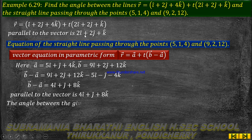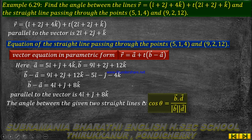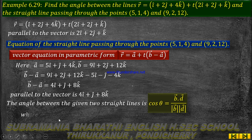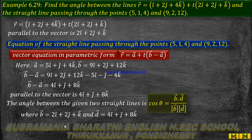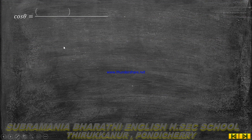So the parallel vector for the second line is 4i cap plus j cap plus 8k cap. The angle between the given two straight lines is found using: cos theta equal to b vector dot d vector divided by modulus b vector times modulus d vector, where b vector and d vector are the parallel vectors of the two lines.